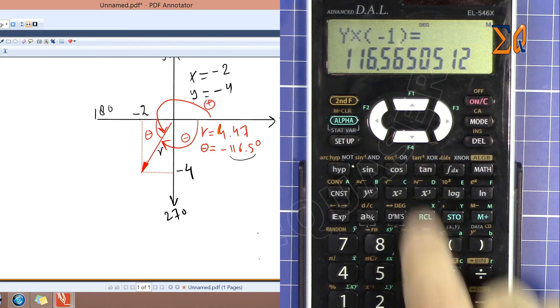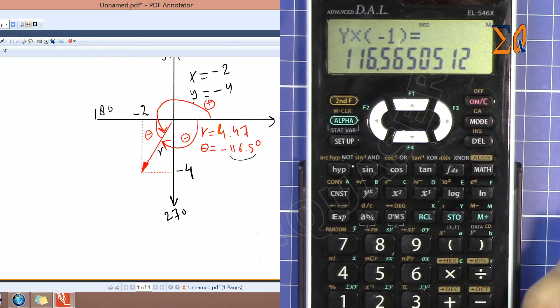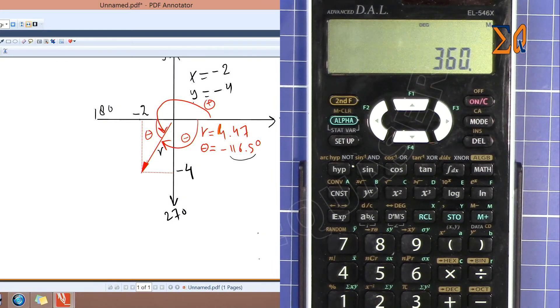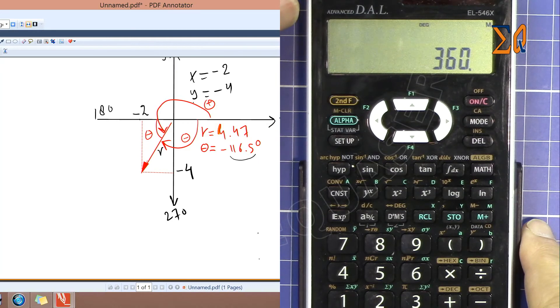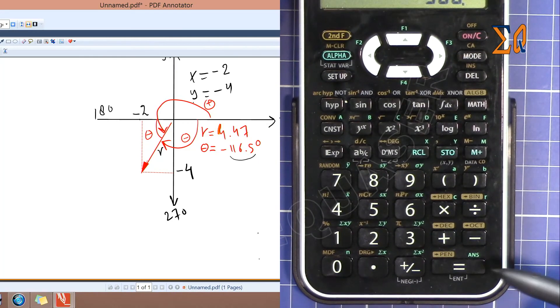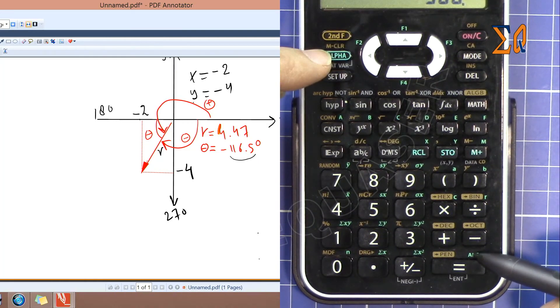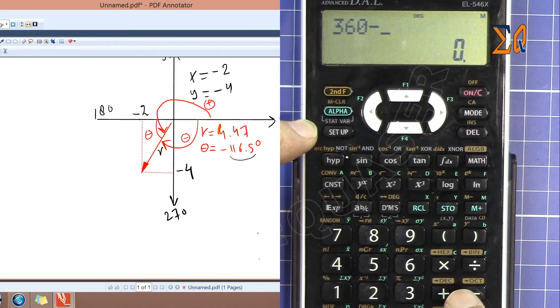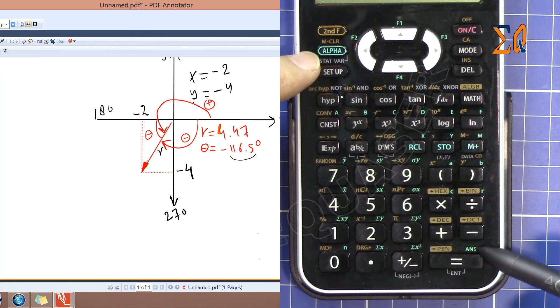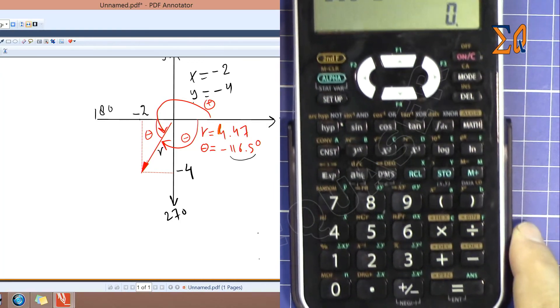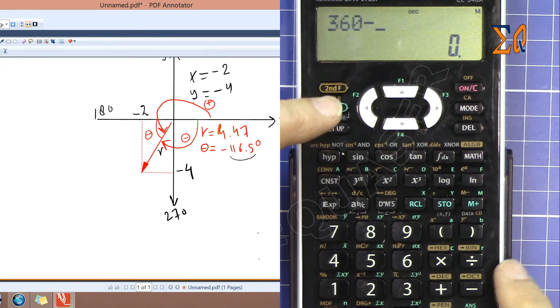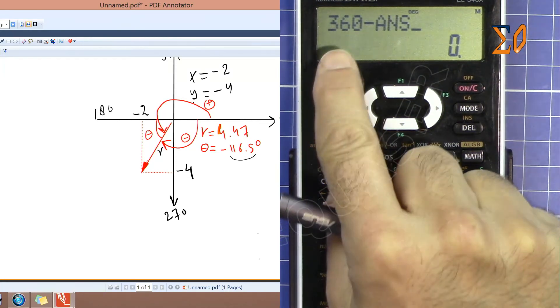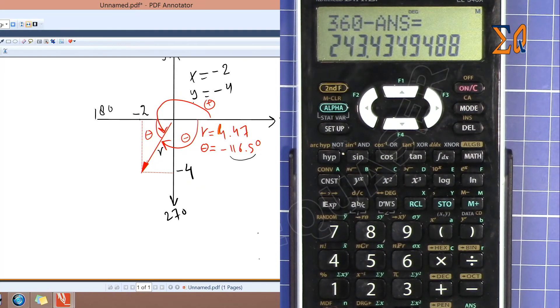So now this is positive. 360 minus this answer. If you want to subtract the previous calculation, this answer is here with alpha button—so with equal sign, 360 minus. To get the value for the last answer, use alpha and answer. You see 360 minus answer, then press equal sign.